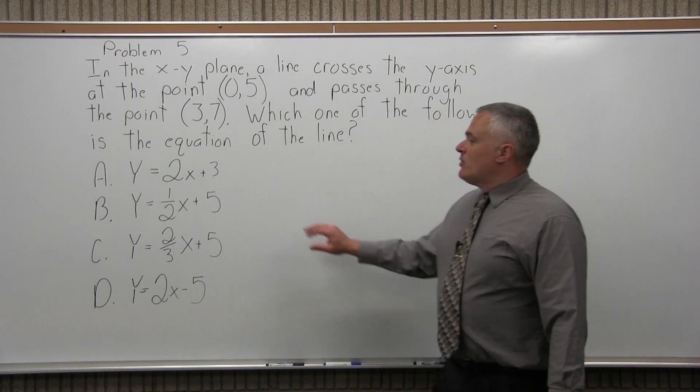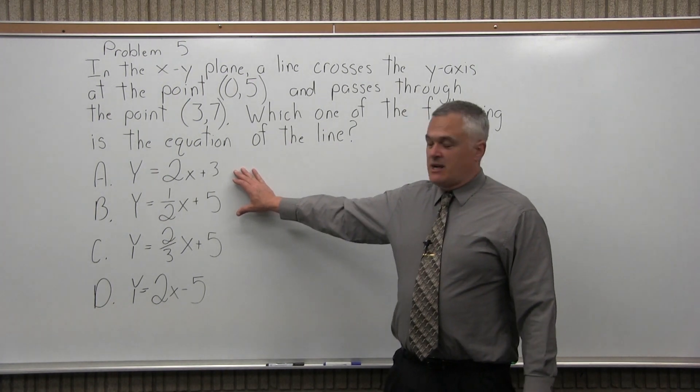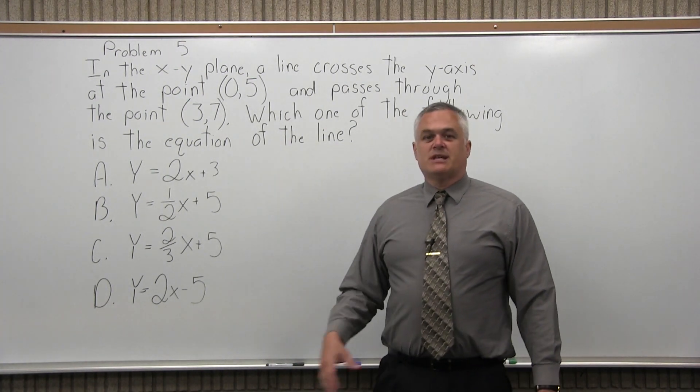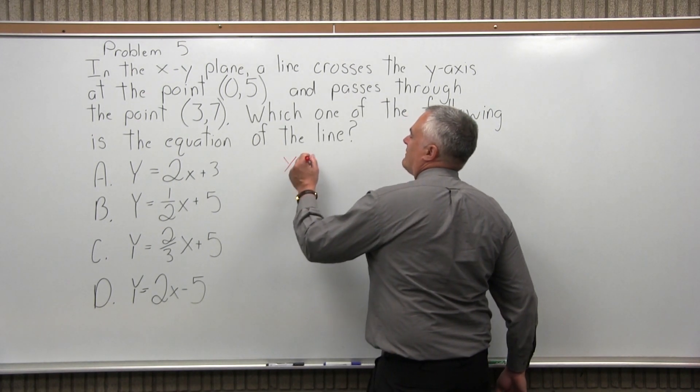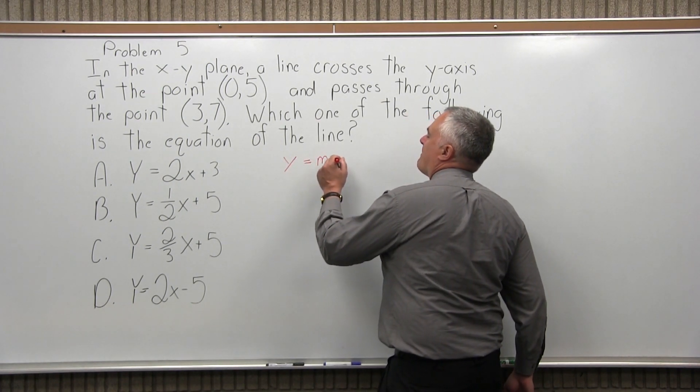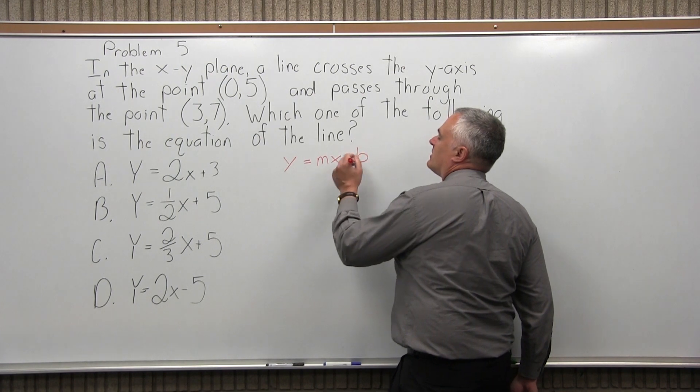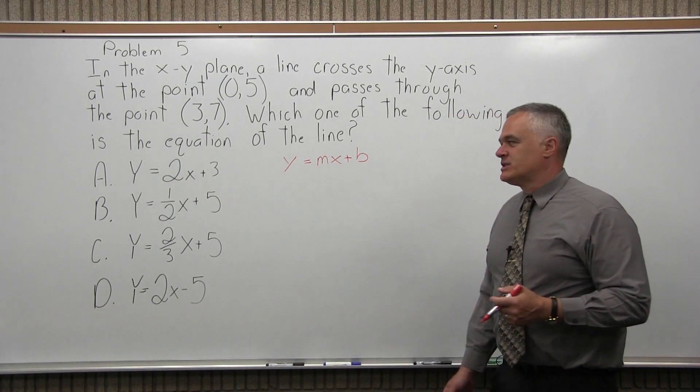So which one is it? Now what you want to notice to get the problem started is all your options are in the same format. They have y equals on one side. What we have is y equals mx plus b. This is a very famous form for the equation of a line.